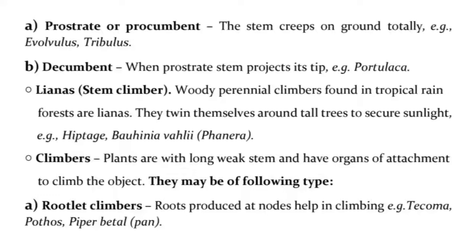Lianas (Stem climbers) — woody perennial climbers found in tropical rainforests are lianas. They twine themselves around tall trees to secure sunlight, e.g., Hiptage, Bauhinia vahlii, Phanera. Climbers — plants with long weak stems having organs of attachment to climb objects.